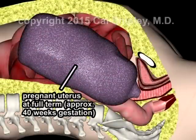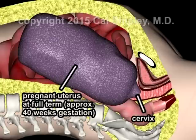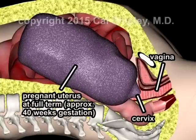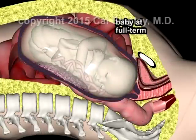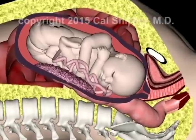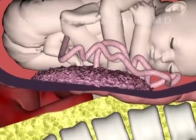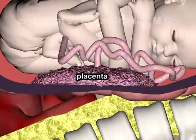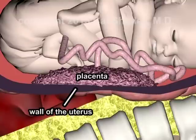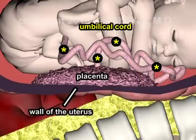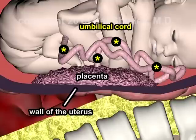Let's start by looking at a term fetus — one which has a gestational age of about 40 weeks. The cervix serves as the outlet for the uterus and protrudes into the vagina. The placenta is a plate-like structure attached to the wall of the uterus, and in conjunction with the umbilical cord, it acts as a conduit to transfer nutrients and oxygen from mother to baby, and carbon dioxide and waste products from baby to mother. A more in-depth review of placental and umbilical cord physiology is available at calshipleymd.com.